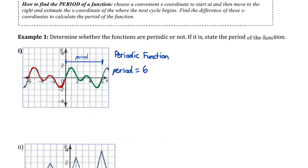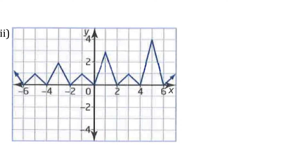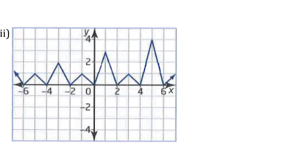Let's try another example. If we try to find a pattern of y-values that repeats, I can't seem to find it. You might think this is one cycle, but that cycle does not repeat — if I drag it over, it doesn't line up exactly with the next section. That would be true for any cycles you tried to map along this function; the pattern of y-values would not repeat.